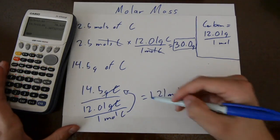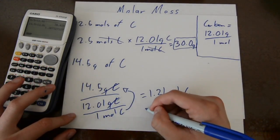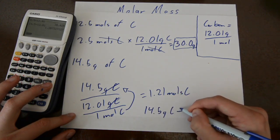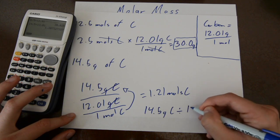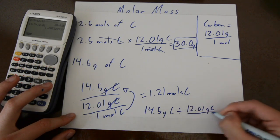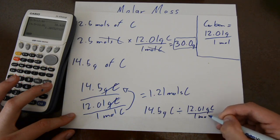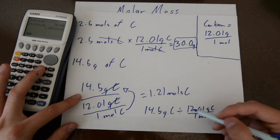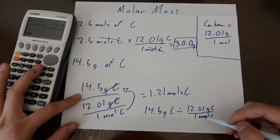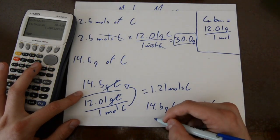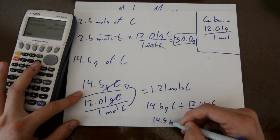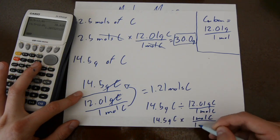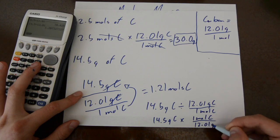If you don't like to do calculations like this, you can also do it like this. 14.5 grams of carbon divided by 12.01 grams of carbon over 1 mole of carbon. And in math if you divide fractions you can just flip it over. You just flip it and you can multiply. So you have 14.5 grams of carbon multiplied by 1 mole of carbon divided by 12.01 grams of carbon.